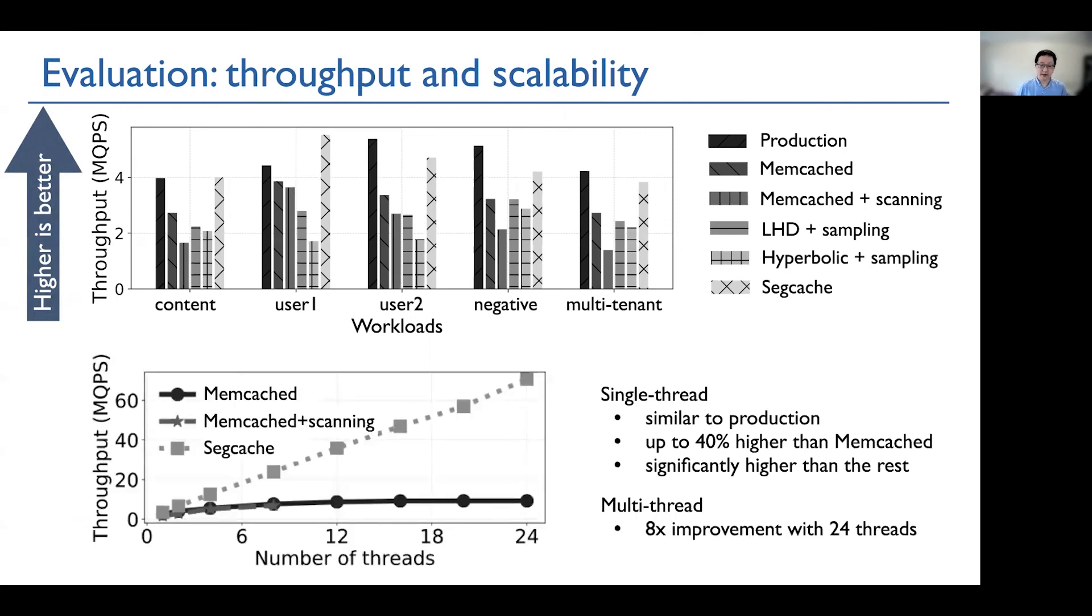In terms of scalability, we observe that memcached stops scaling at around 8 threads, while Segcache achieves close to linear scalability until like 24 threads.